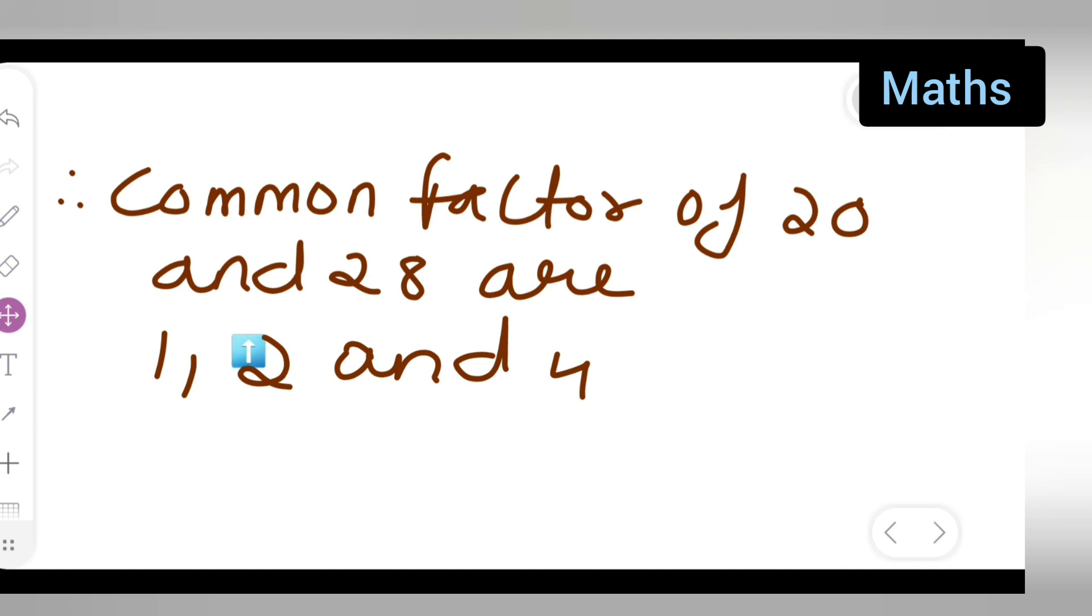So the common factors of 20 and 28 are 1, 2, and 4. I hope you have understood how to find the common factors of 20 and 28. Thanks for watching.